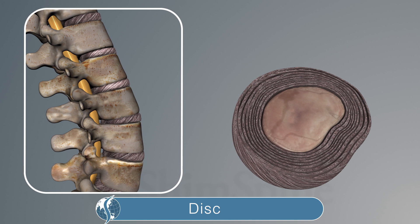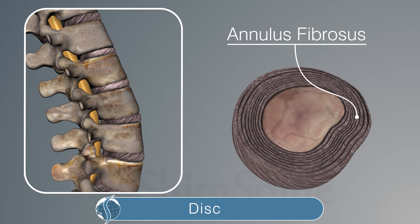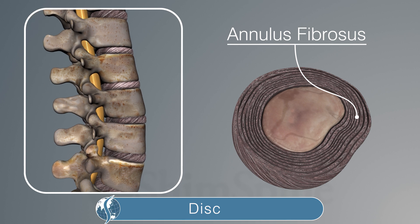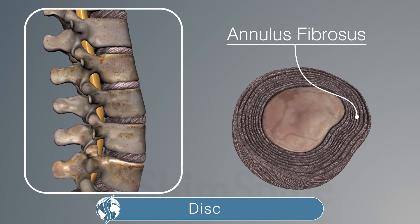The disc has two main parts. The strong outer part is called the annulus fibrosus, and it acts as a ligament holding the bones to each other. This allows the bone and the spine to bend, turn, and rotate without breaking or dislocating.